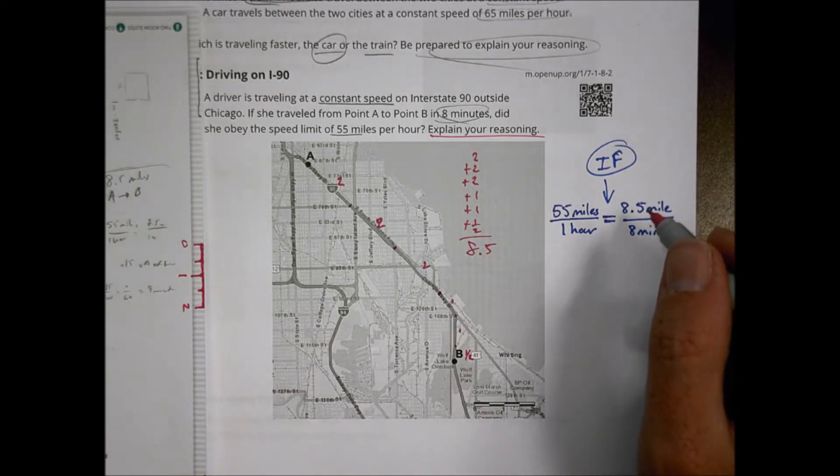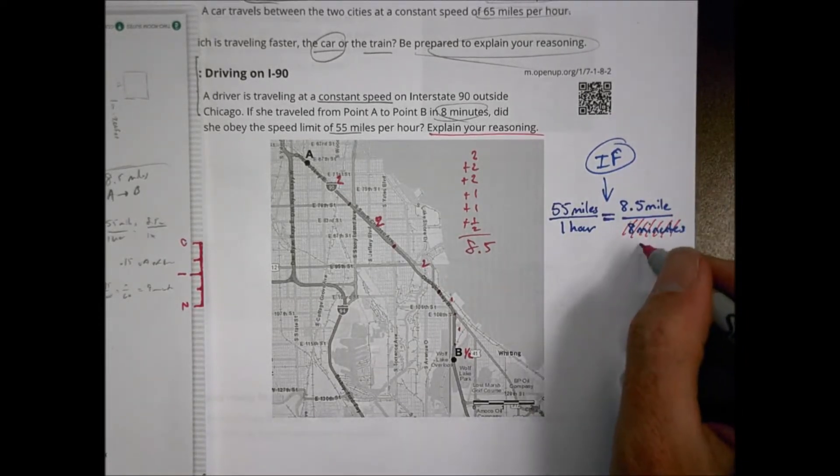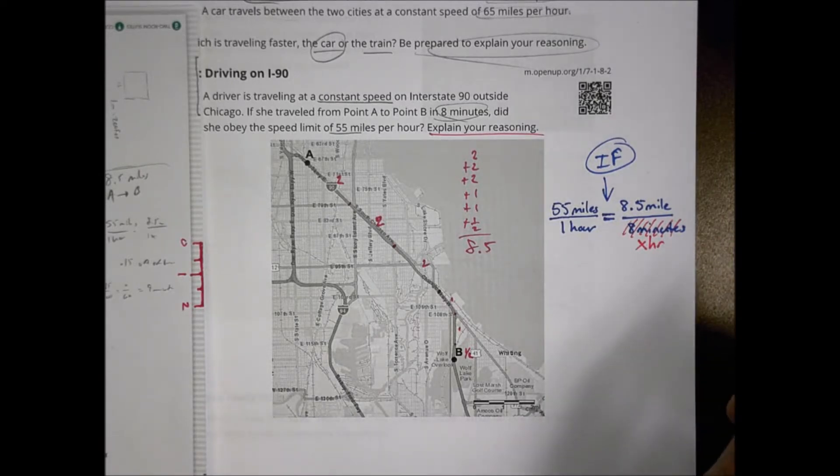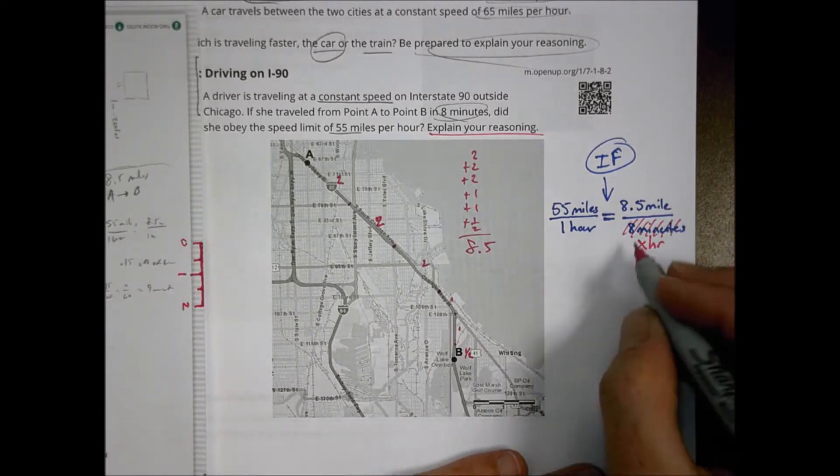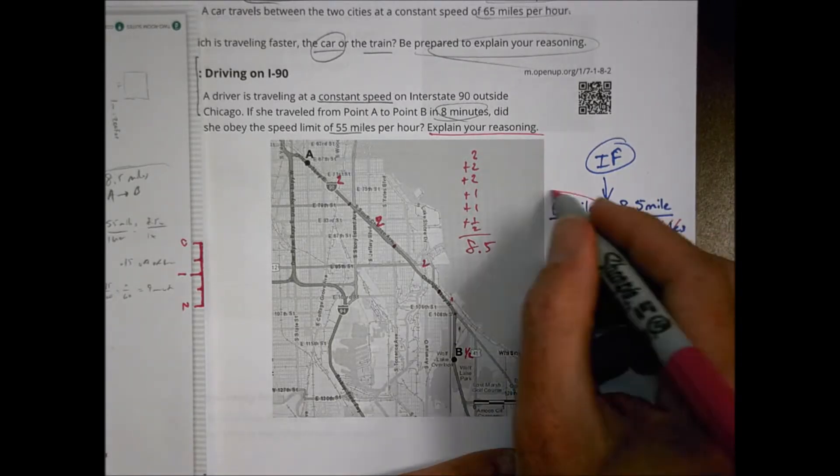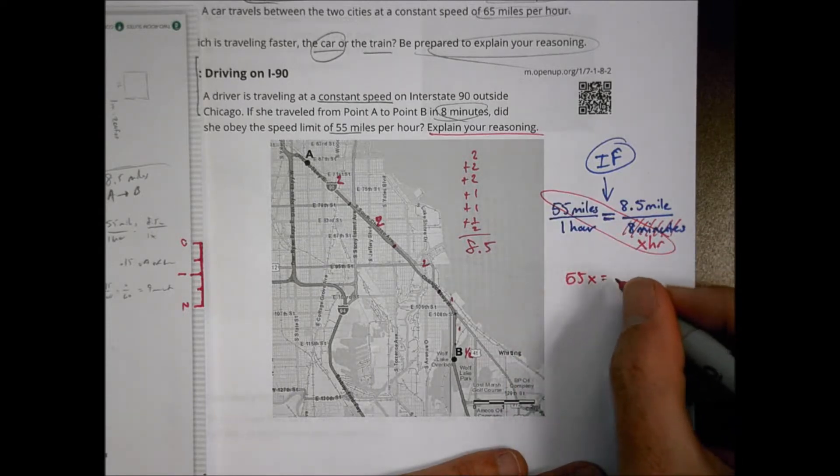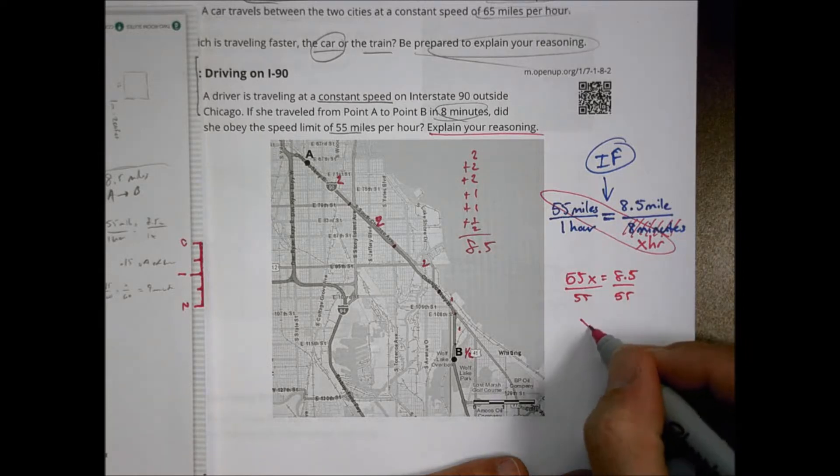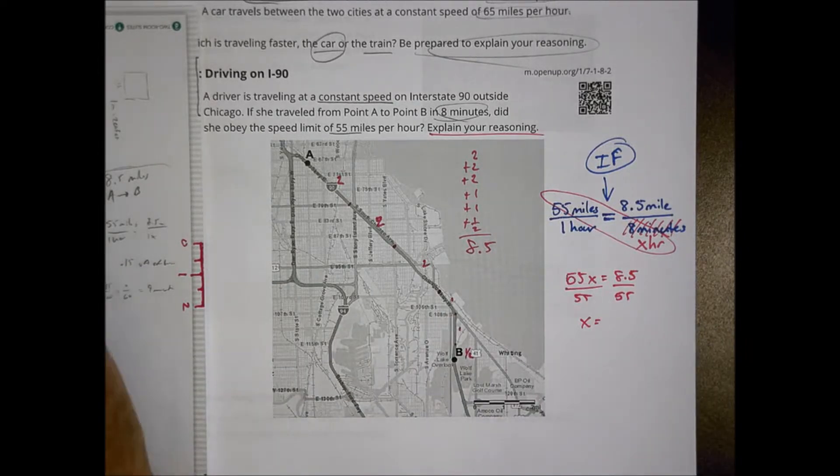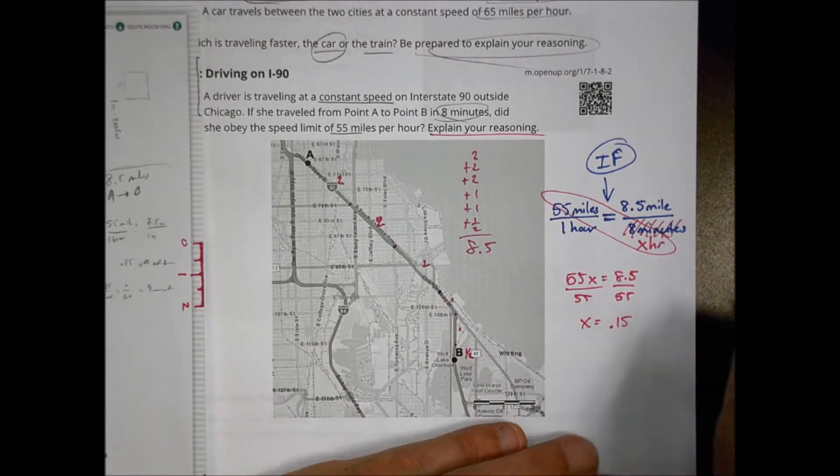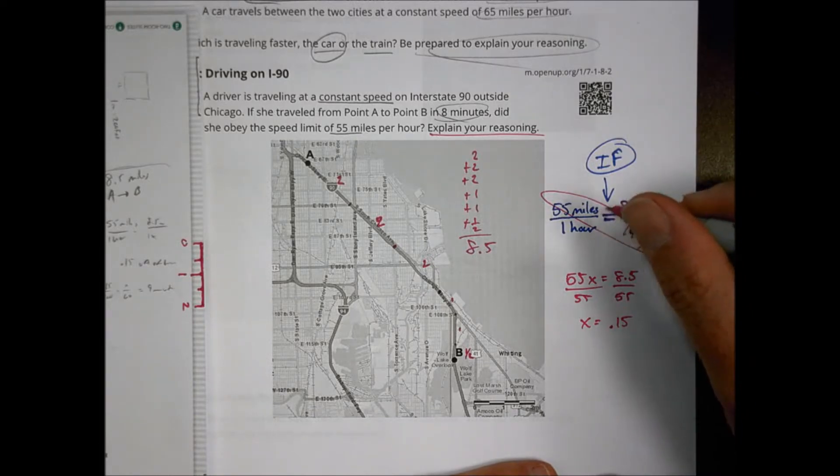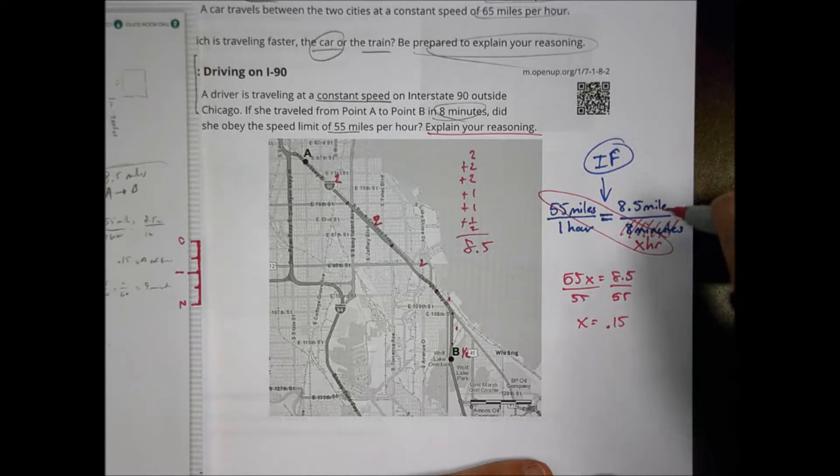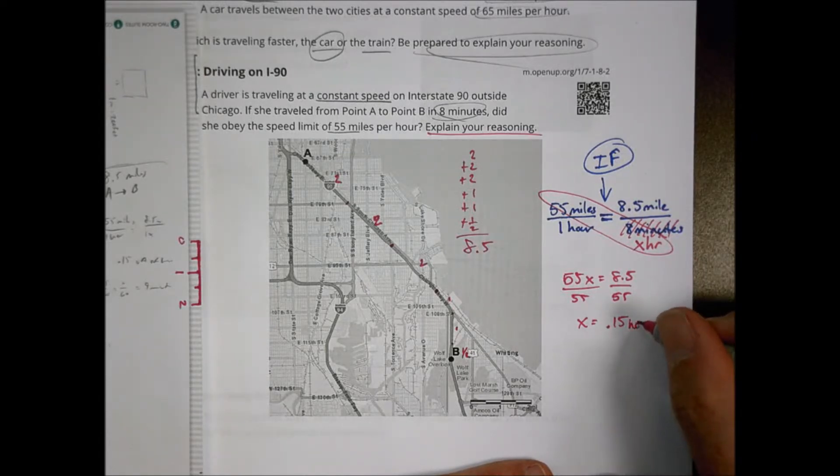We have 55 miles in an hour. And so if I was to figure out how far this is going to be in X number of hours to see if it's true or not, I would change my eight minutes to see what the rate's actually going to be. So to solve this, I'm going to do some cross multiplication. I would do 55 times X to get 55X equals 8.5 miles. Then I could divide 55 by both sides to find that X is going to equal 8.5 divided by 55, which is 0.15.